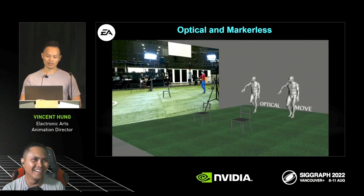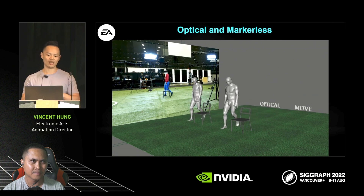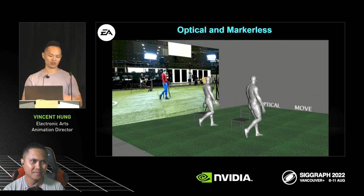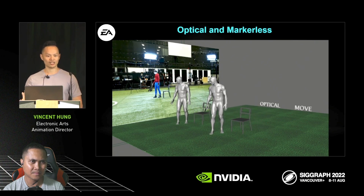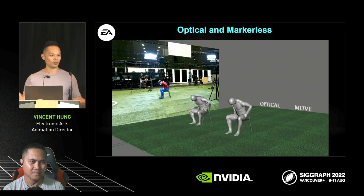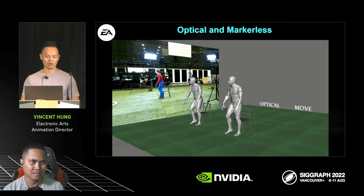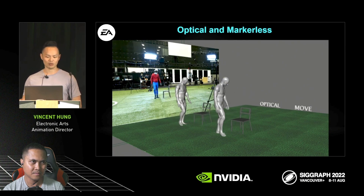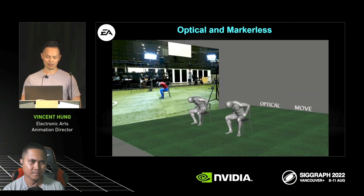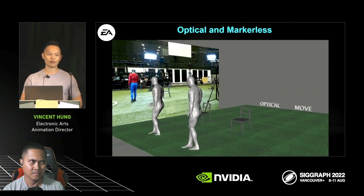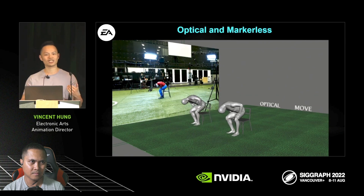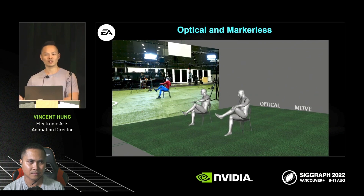For this one, the chair here is actually a one-to-one build to the actual chair. We wanted to show the interaction with environment props and how accurate it is, because that's really important for us when we do big mocap shoots with a lot of set props, especially for cinematics with many scenes. When he puts his hand on his thigh, you can see that for the optical, the hand rotation is more accurate here.